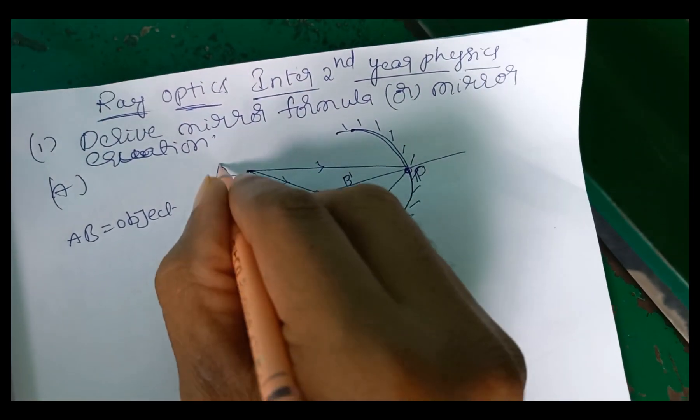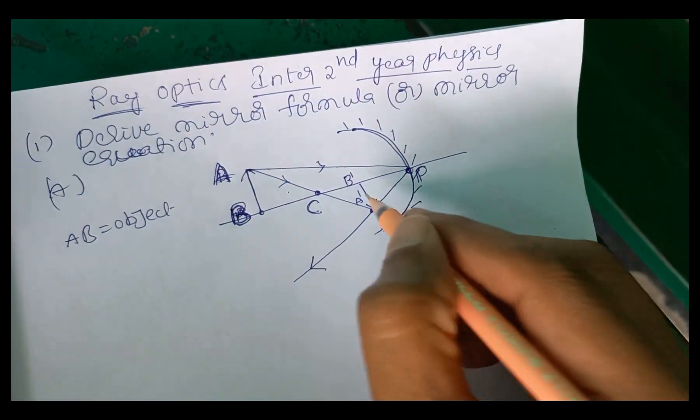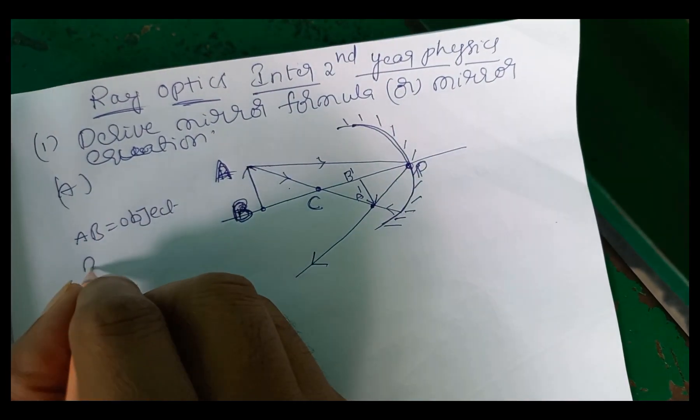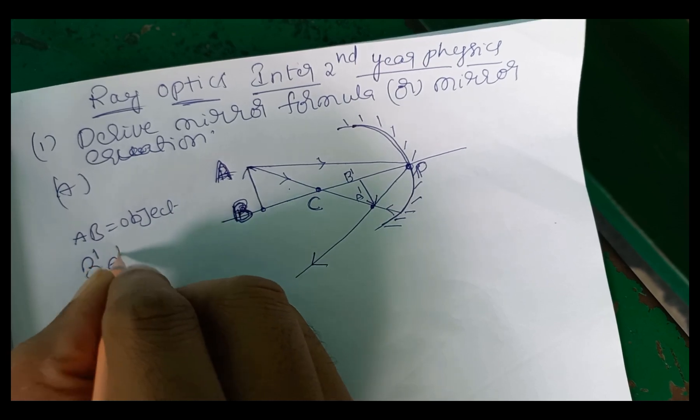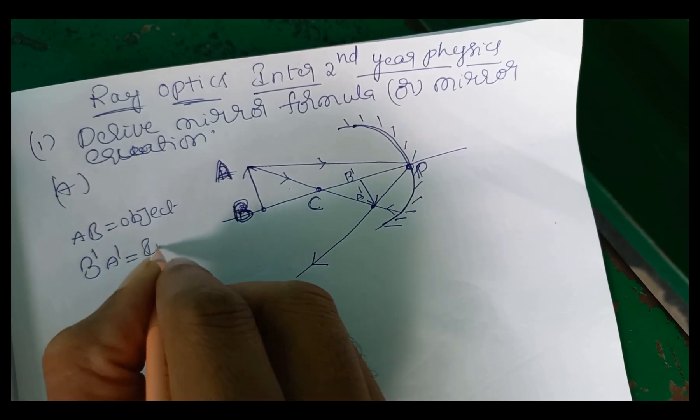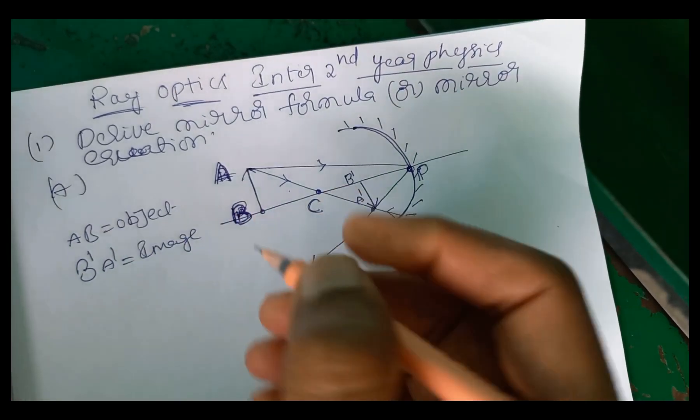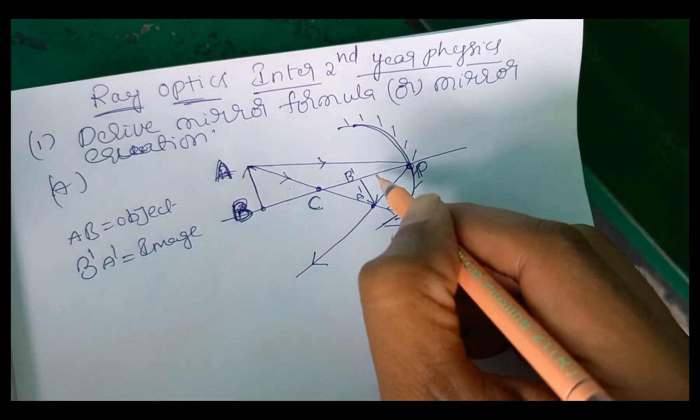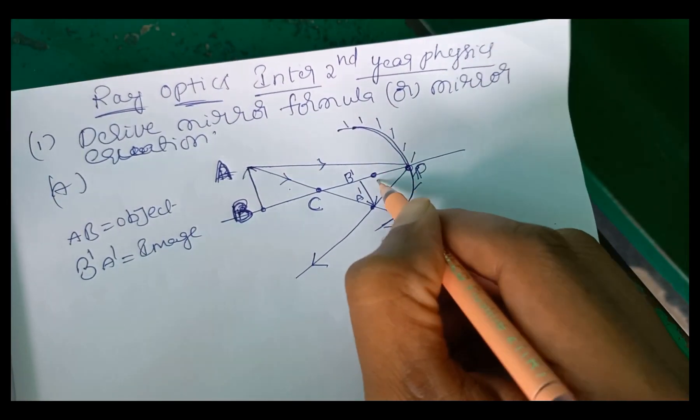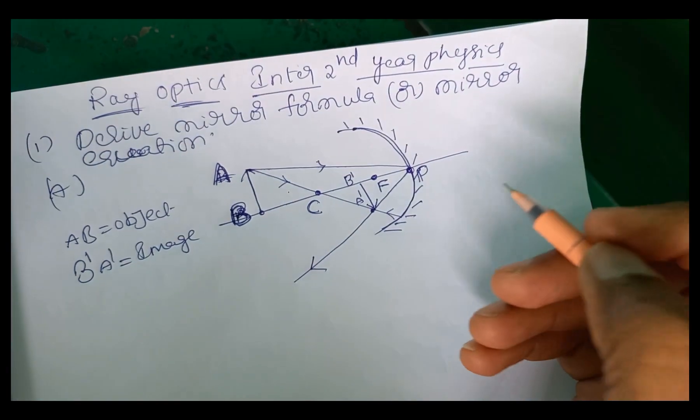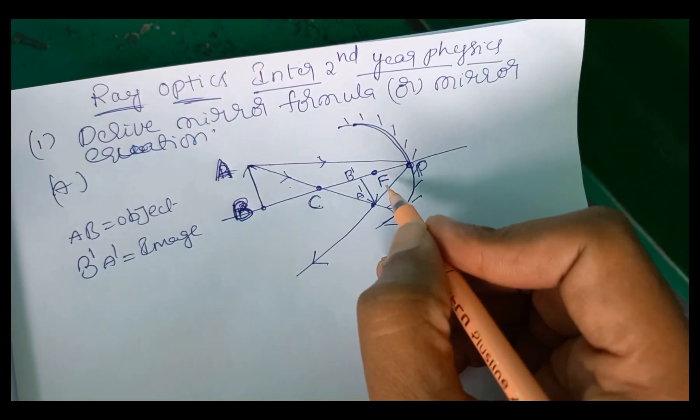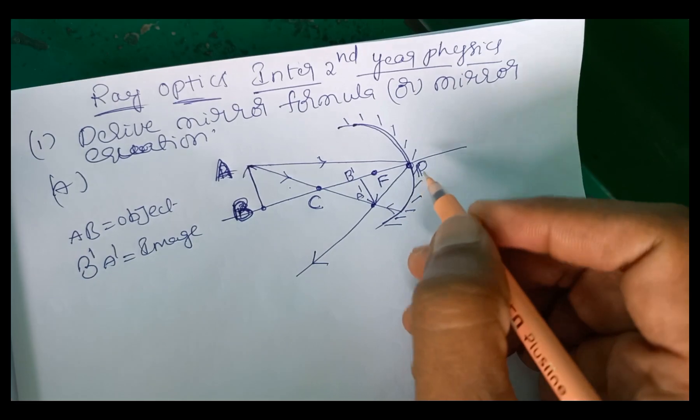A, B is the object and B dash A dash is image. Image, inverted image. And this point is called focal point. Image is formed between F and C.